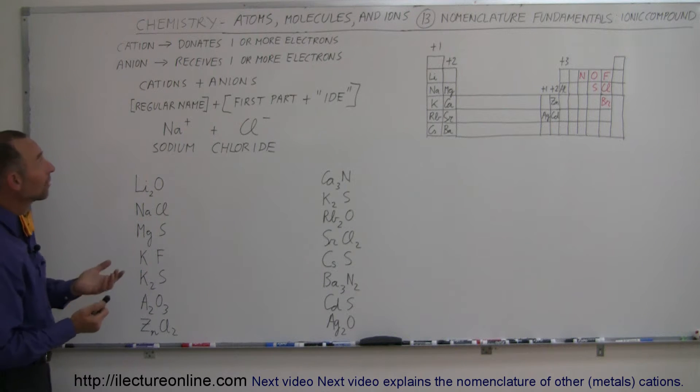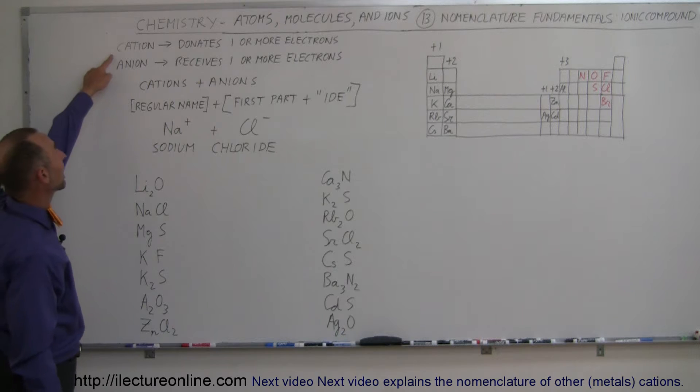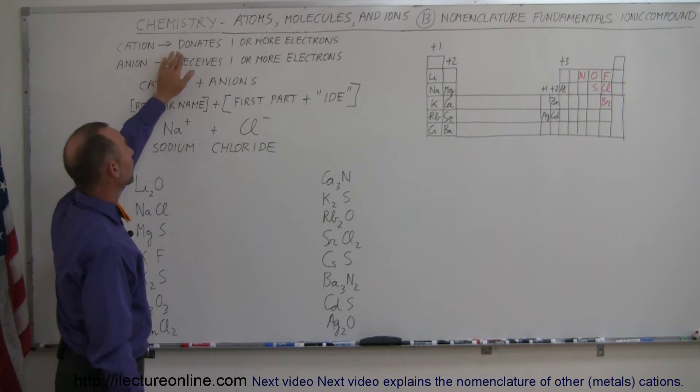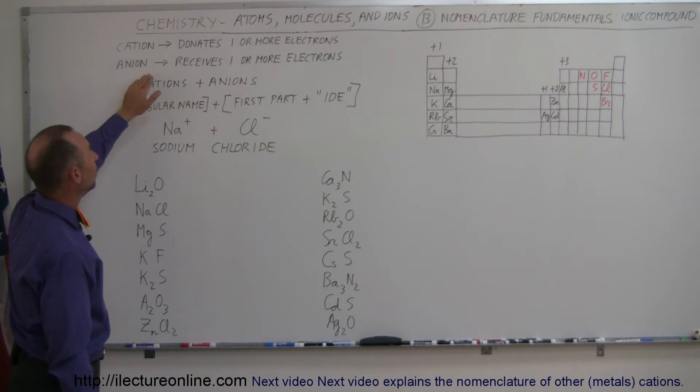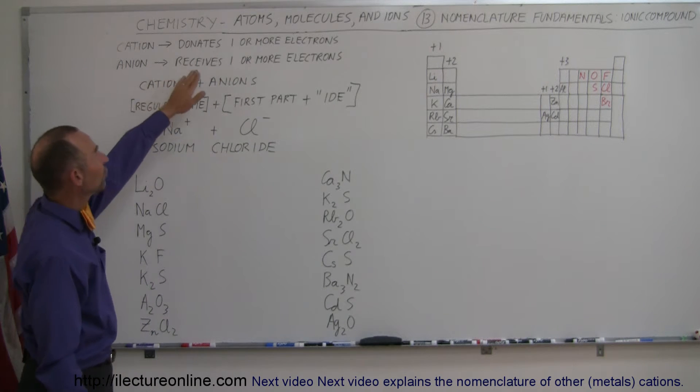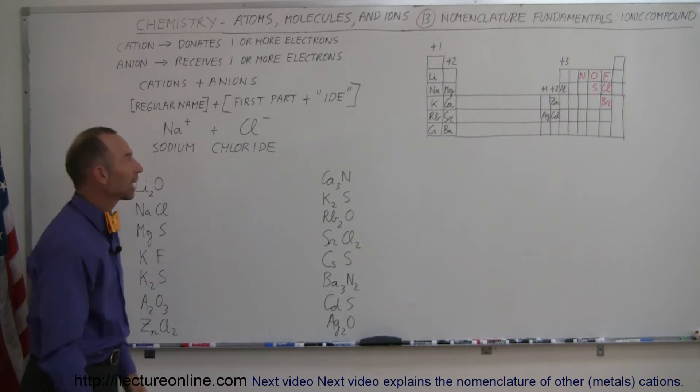So what are ions? Ions are either cations or anions. Cations are positive ions because they donate one or more electrons. Anions are negative ions because they receive one or more electrons, so therefore they become negatively charged.